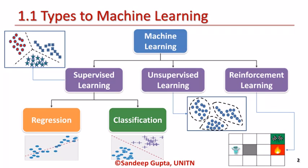Machine learning can be broadly classified as supervised learning, unsupervised learning, and reinforcement learning. In supervised learning, there is sufficient label data to train a model — the model learns from the training data to predict an input query. This can be further divided into regression and classification.